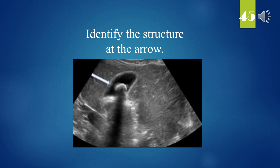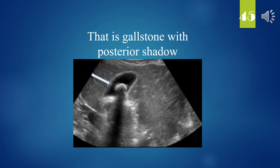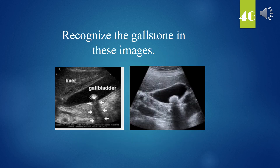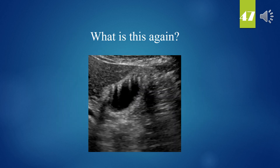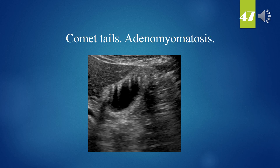Identify the structure at the arrow. That is a gallstone with posterior shadow. Recognize and memorize the gallstone in these images. What is this again? Comet tails — adenomyomatosis.